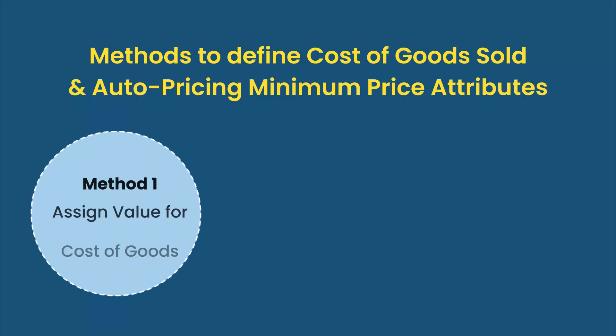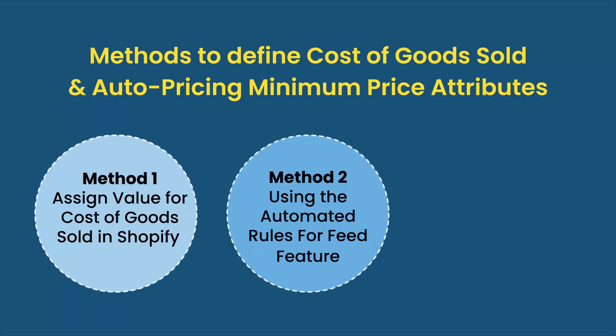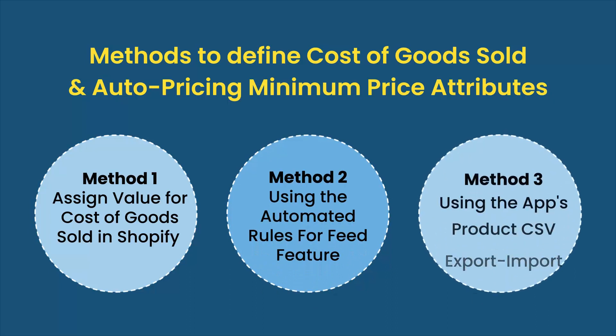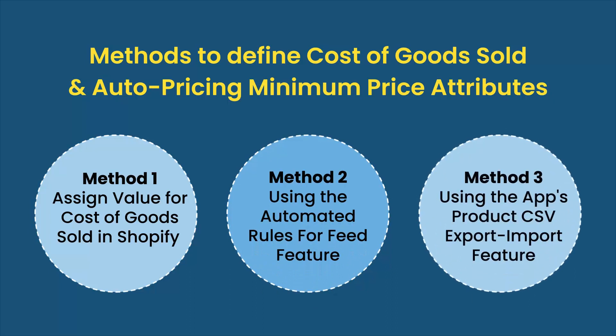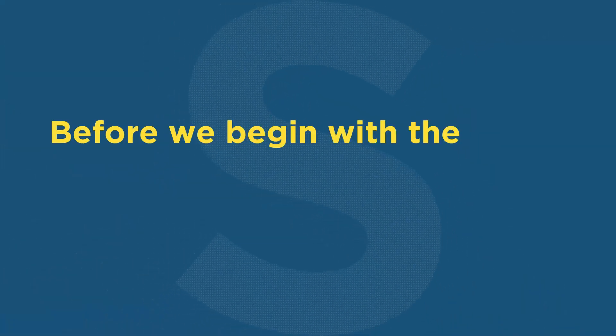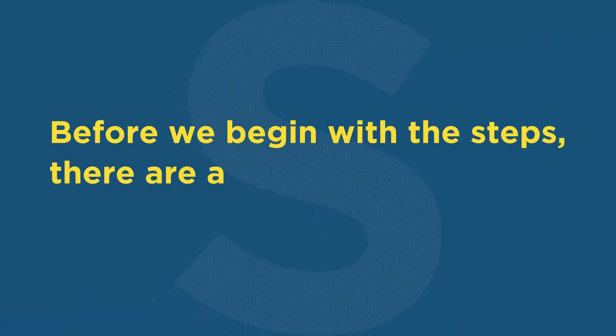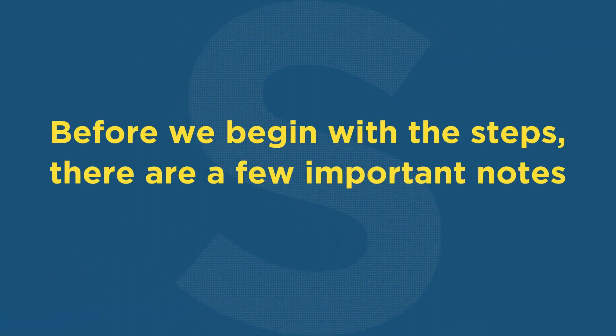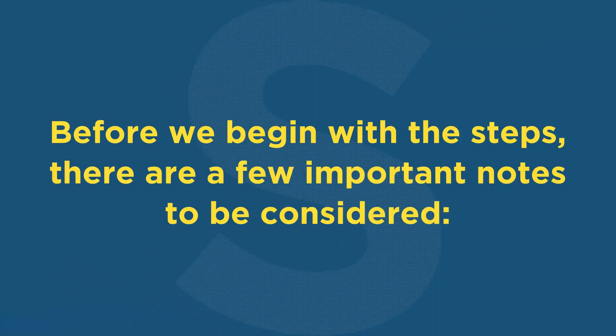There are a few different ways to assign values for cost of goods sold, COGS, and auto pricing minimum price attributes. We will walk you through all of them one by one. Before we begin with the steps, there are a few important notes to be considered.